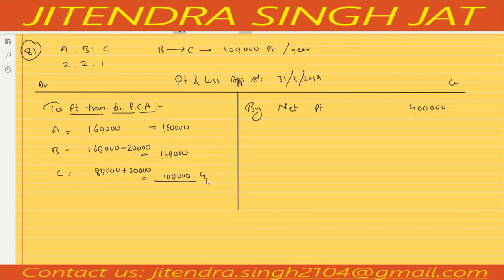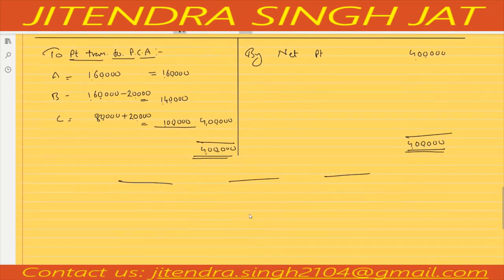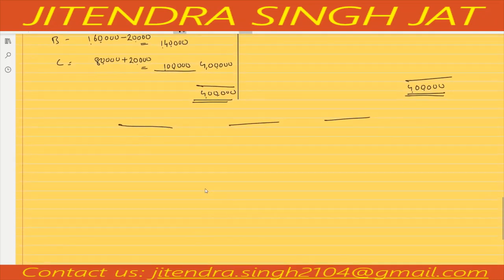The partner who has given the guarantee only sacrifices from his share of profit. Now for the second part, profit is 6 lakh for 2020. Let me prepare the profit and loss appropriation account for that year also.